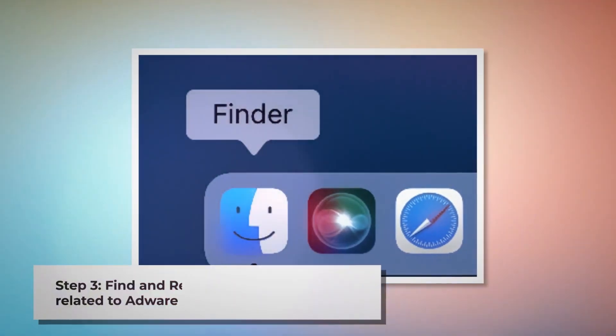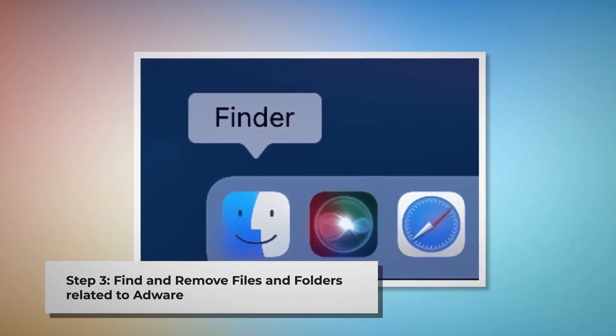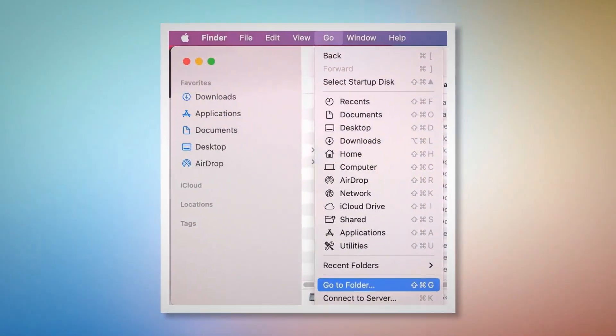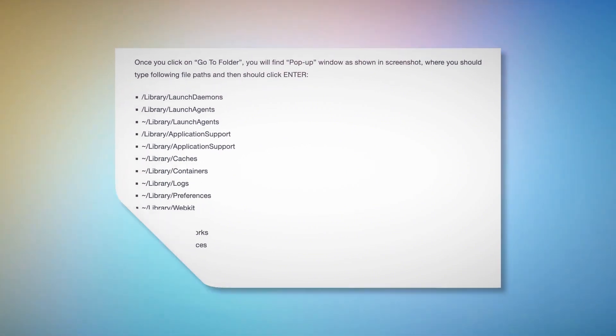Step three: find and remove files and folders related to adware. First, make sure you are in the Finder folder. If not, follow the steps mentioned in step two to go to the Finder folder. Once you are in the Finder folder, click on Go at the top menu bar of your Mac, and then Go to Folder on the drop-down menu, as shown in the screenshot. Once you click on Go to Folder, a pop-up window will appear where you should type these file paths and press Enter: /Library, /Library/LaunchDaemons, /Library/LaunchAgents, /Library/Application Support, and so on, as shown here. You should look for suspicious or malicious files and move them to Trash. A few examples of such malicious files are shown here. Adware usually places many files with the same string.